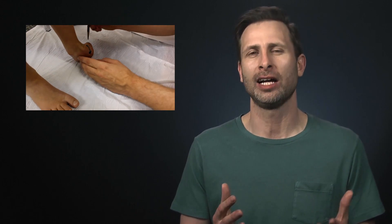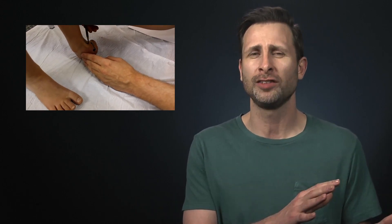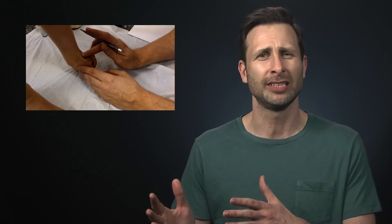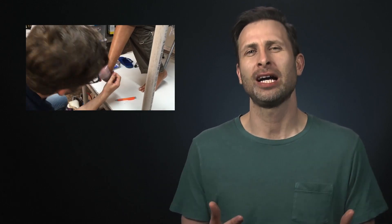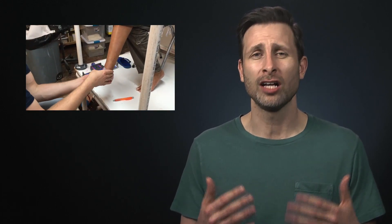An ideal socket makes intimate contact with the limb, compressing all the soft tissue without adding pressure to sensitive or bony areas. This creates a secure prosthesis that doesn't slip off and is also comfortable.